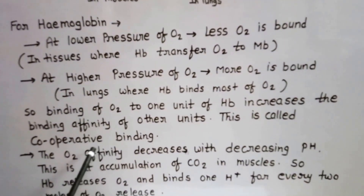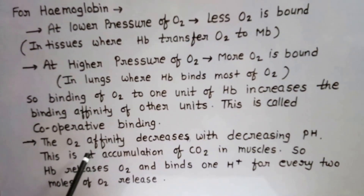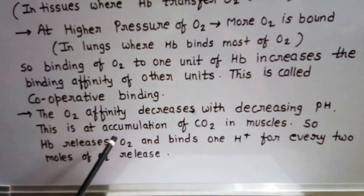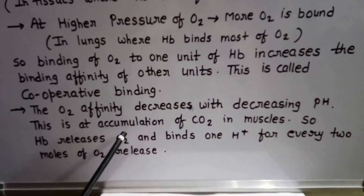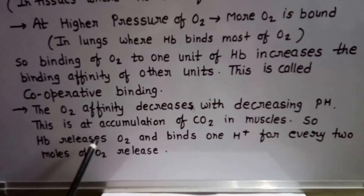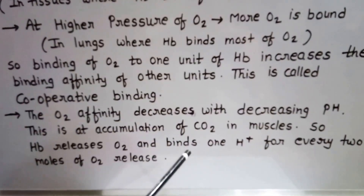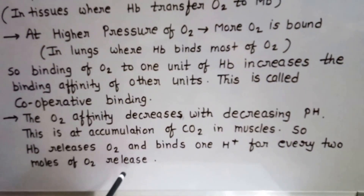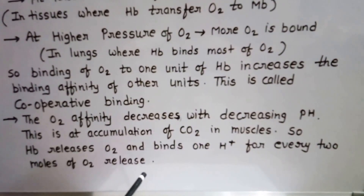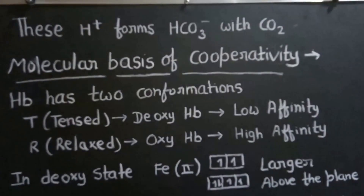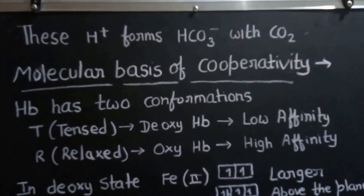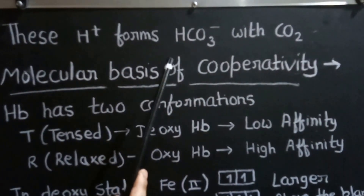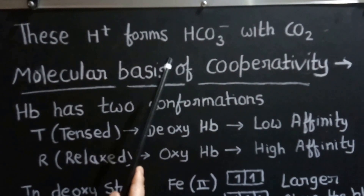Another conclusion is that oxygen affinity decreases with decreasing pH due to accumulation of carbon dioxide in the muscles. Hemoglobin releases oxygen and binds one proton for every two moles of oxygen released. This proton forms bicarbonate ion with carbon dioxide, providing a route for the transportation of carbon dioxide to the lungs.